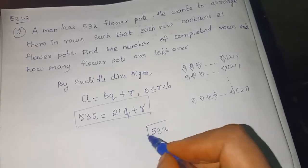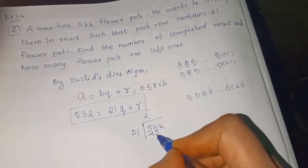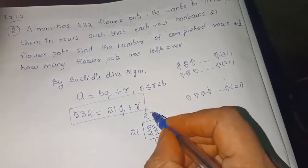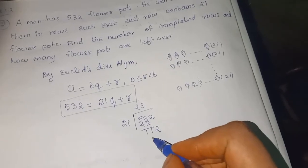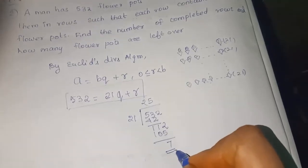532 divide by 21. 2 21s are 42. 112 again. 5 21s are 105. What is the remainder? 7 is the remainder.